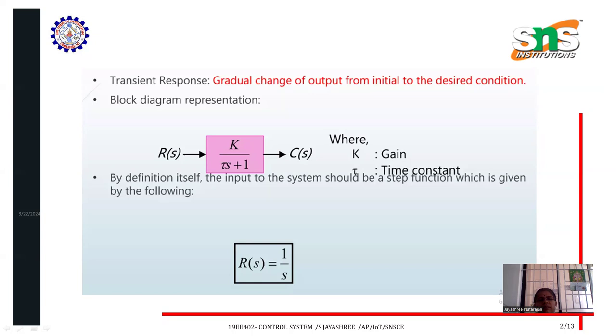What is transient response? It is a gradual change of output from initial value to the desired condition. A sudden increase in value, we call it as a transient response. Sudden change in the system, we call it as a transient response.